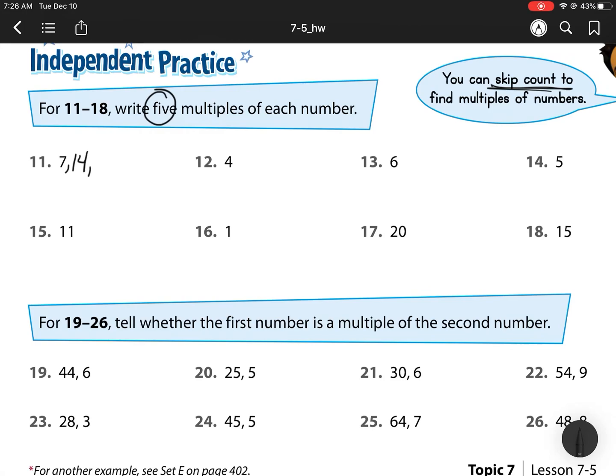7 times 3 is 21, times 4 is 28, times 5 is 35. For 4, we have 4, 8, 12, 16, and 20.